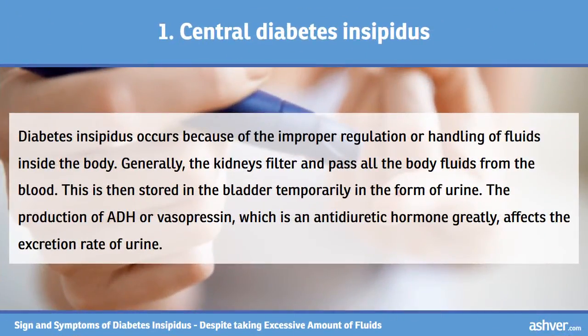In central diabetes insipidus, secretion of antidiuretic hormone is very less. If any part of the brain is affected or injured, it directly affects the formation and storage of antidiuretic hormone. Factors such as surgery of the brain, head injuries, infections, tumors of the brain, sickle cell disease, blockage of brain arteries, and sometimes genetic factors are also responsible for this.